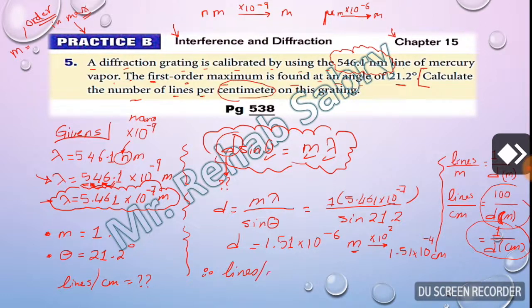So number of lines per centimeter equals 1 over this digit, which is 1.51 times 10 to the power of negative 4 centimeter.